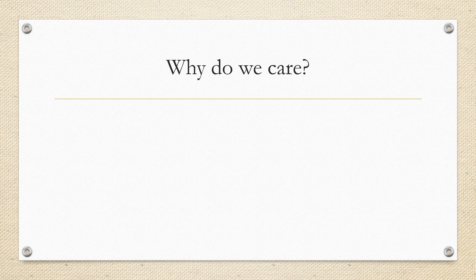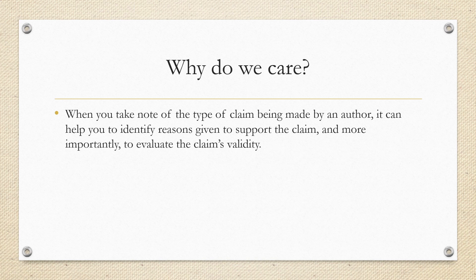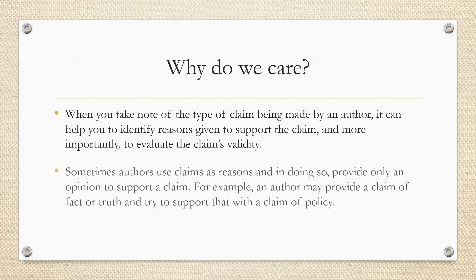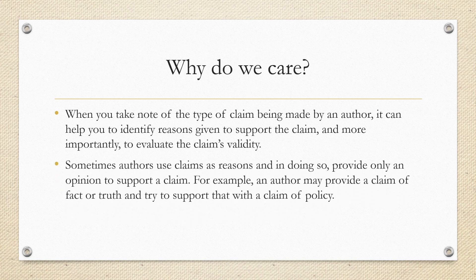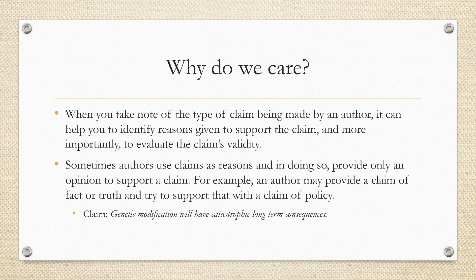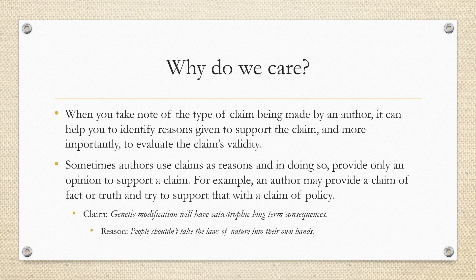So why do we care about different types of claims? When you take note of the type of claim being made by an author, it can help you to identify reasons given to support the claim, and more importantly, to evaluate the claim's validity. Sometimes authors use claims as reasons, and in doing so provide only an opinion to support a claim. For example, an author may provide a claim of fact or truth and try to support that claim with a claim of policy. If my claim is that genetic modification will have catastrophic long-term consequences, and the reason I provide is that people shouldn't take laws of nature into their own hands, I have essentially given you an opinion to back up a debatable claim rather than providing a reason backed by solid evidence. Therefore, if you were evaluating my argument, you would be doubtful of its overall strength.